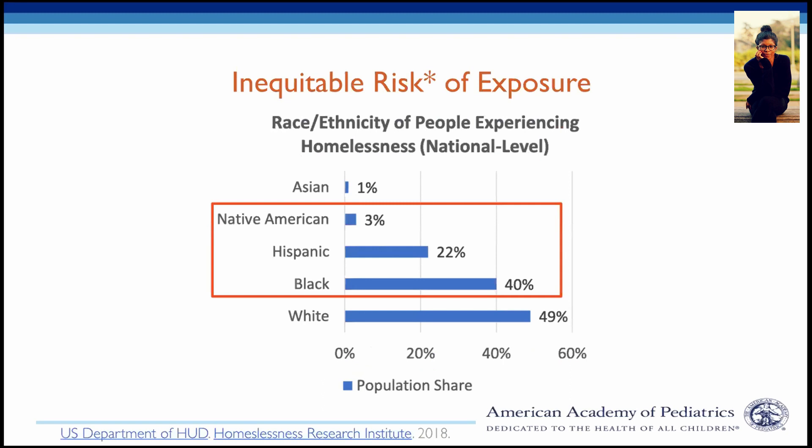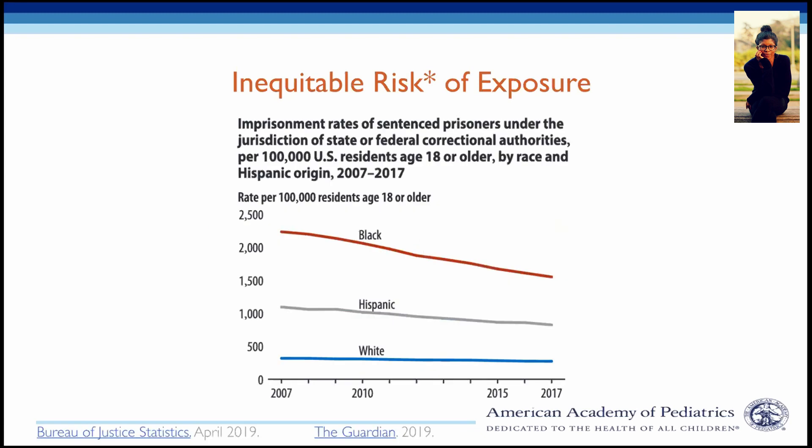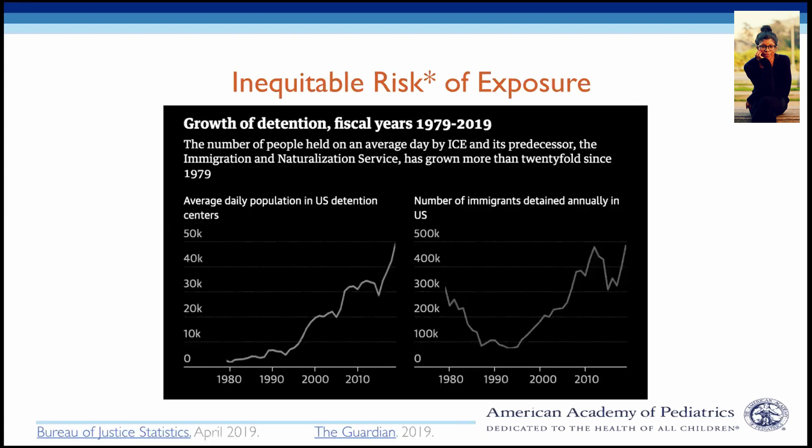Legacies of segregation and suburbanization mean African American and Latinx populations may also disproportionately reside in multi-generational dwellings or dense urban areas where proximity between people increases exposure risk. African American, Latinx, and Indigenous populations are also overrepresented among the homeless, the incarcerated, and detained populations, which confines people in crowded facilities that further increase risk for exposure.